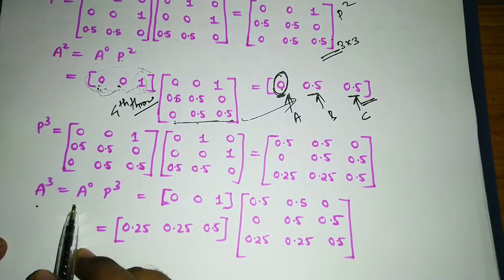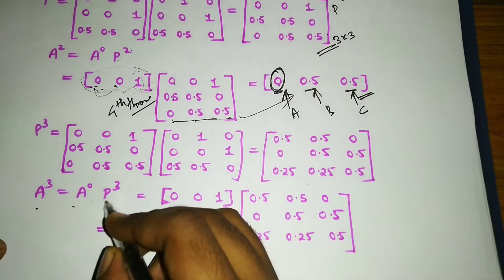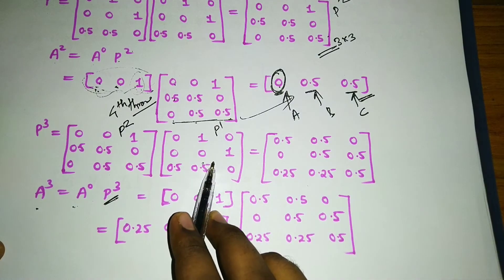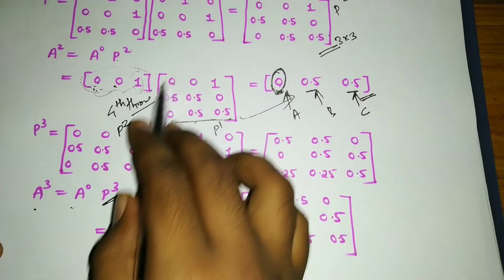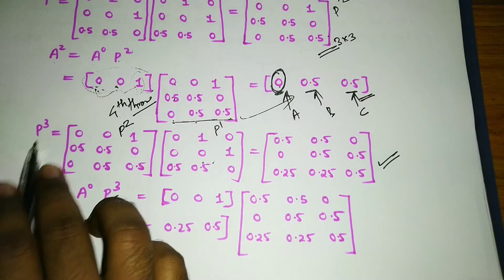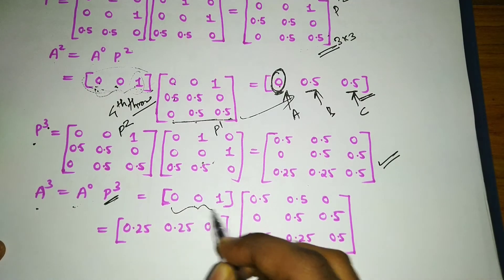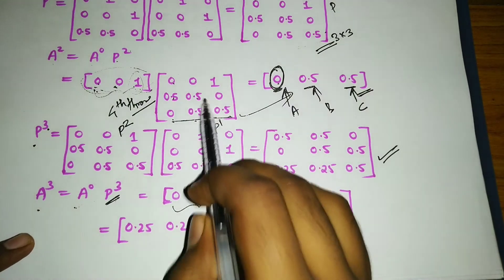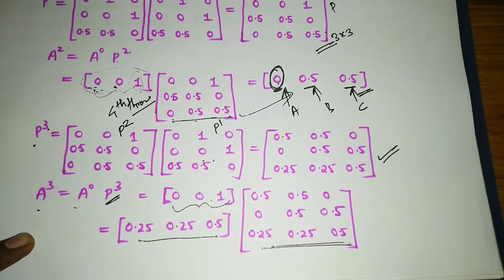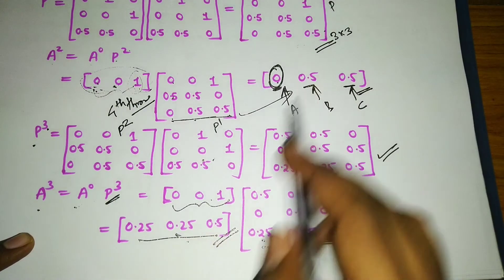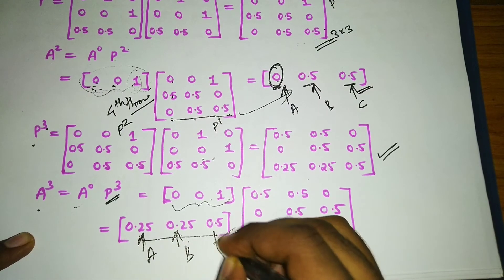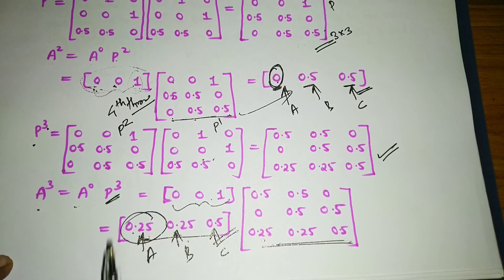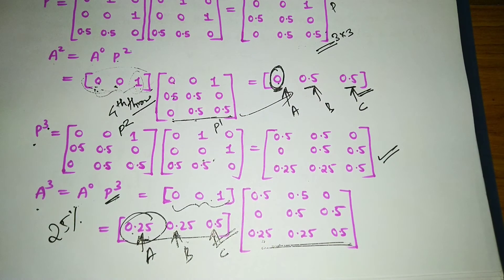For the fourth throw, we need a^3 = a^0 × P³. P³ = P² × P¹, where P¹ is the original TPM and P² is already calculated. Multiplying P² by P¹ gives us P³. Then multiplying by a^0 — which remains [0, 0, 1] — gives a result that is essentially the third row of P³.